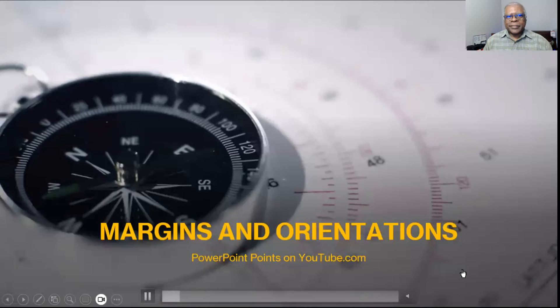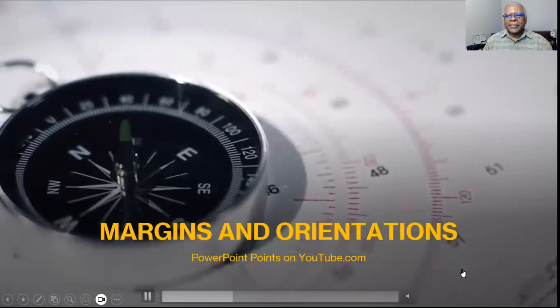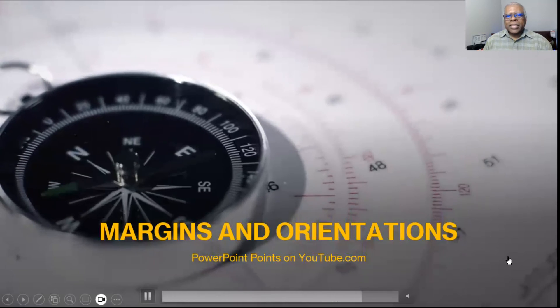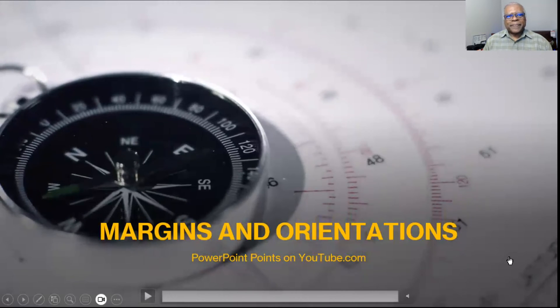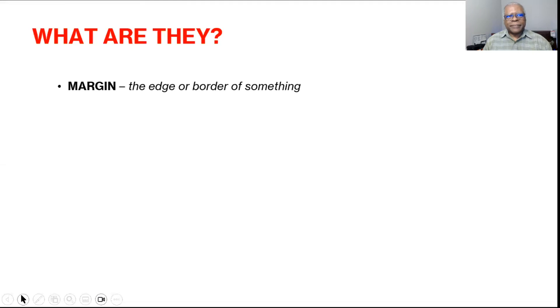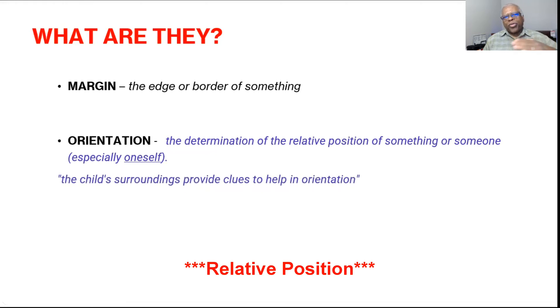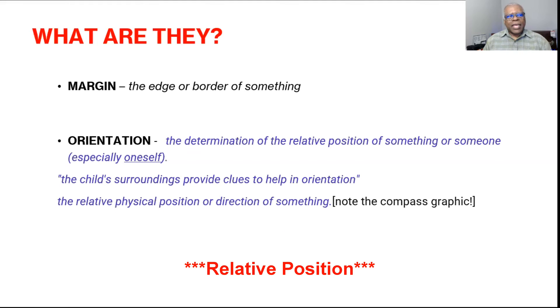Today we're talking about margins and orientations. Let's look at some definitions. A margin is the edge or border of something, as it states here in the slide. The orientation determines the direction of the content. I'll let you finish reading the slide — I'll try not to read all these words to you.